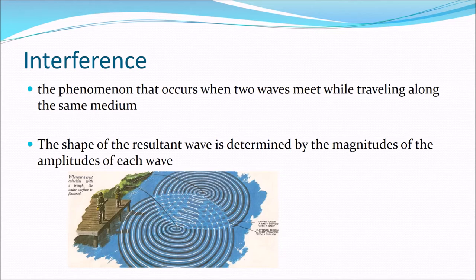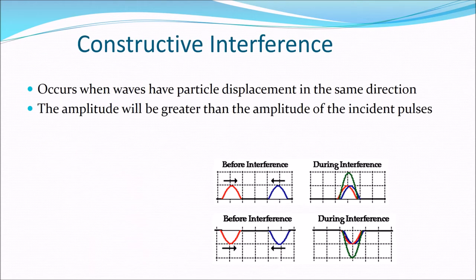Interference is what happens when two waves interact with or meet each other. The shape of the resultant wave — remember, resultant is when we're adding things together in physics — is determined by the magnitudes of the amplitudes of each wave. Here we have constructive interference, which means the waves build on top of each other.